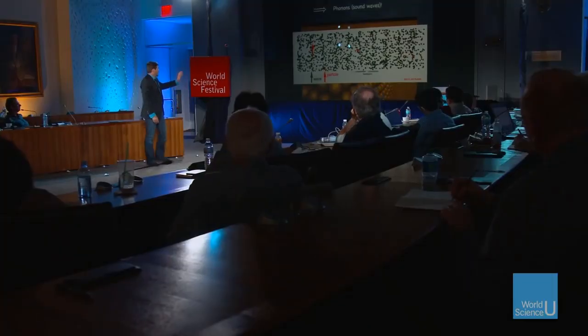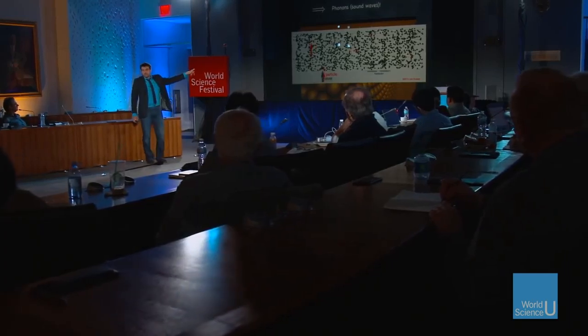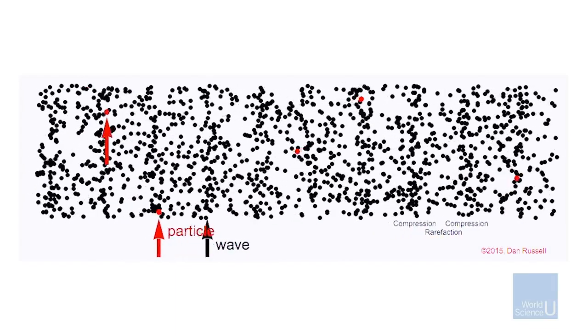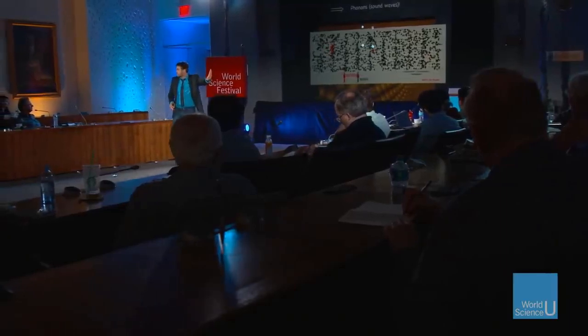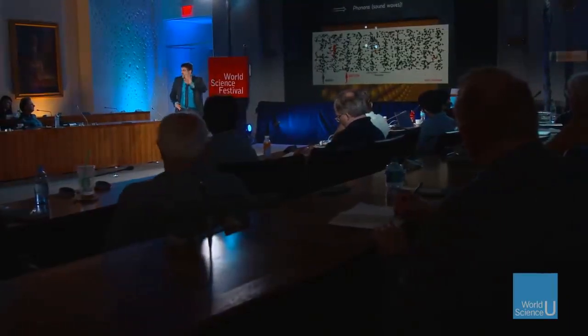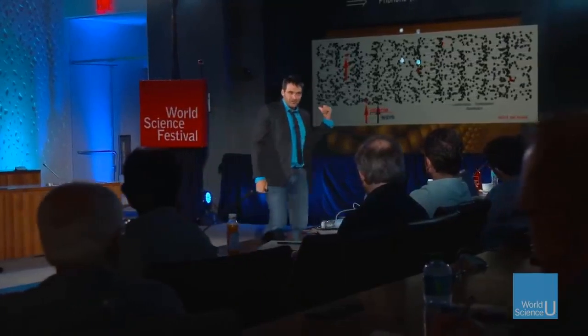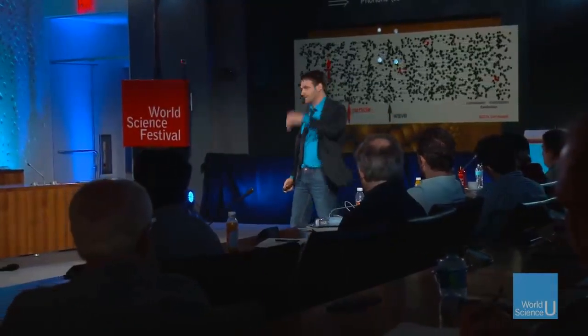It looks more like this: each individual atom is moving back and forth, but collectively there is an over-density which is propagating in a particular direction — that's the wave. But each atom is only doing this. The other animation showed coherence, so you have to combine the two in your mind. So these are the excitations of the superfluid.